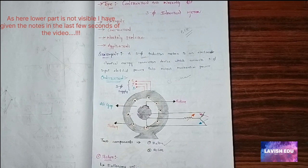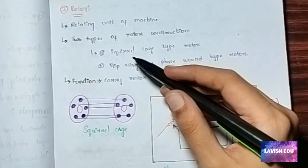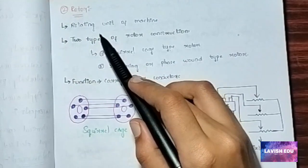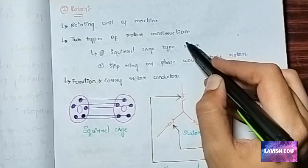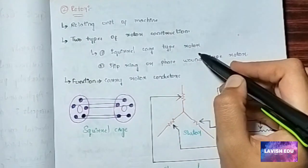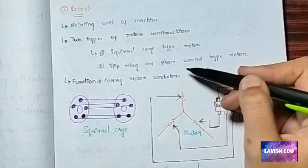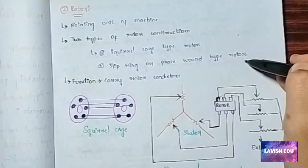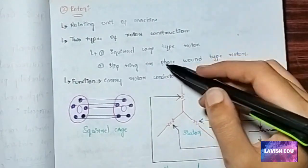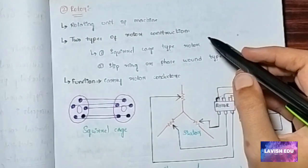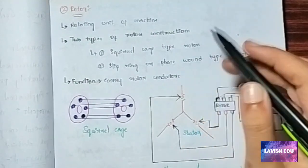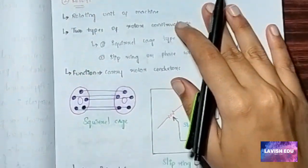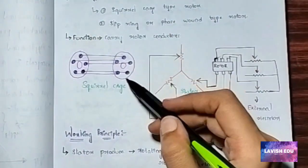The rotor is the rotating unit of the machine. There are two types of rotor constructions: one is the squirrel cage type rotor, and another is the slip ring or phase wound type rotor. The function of the rotor is to carry rotor conductors. This here is the squirrel cage type rotor.